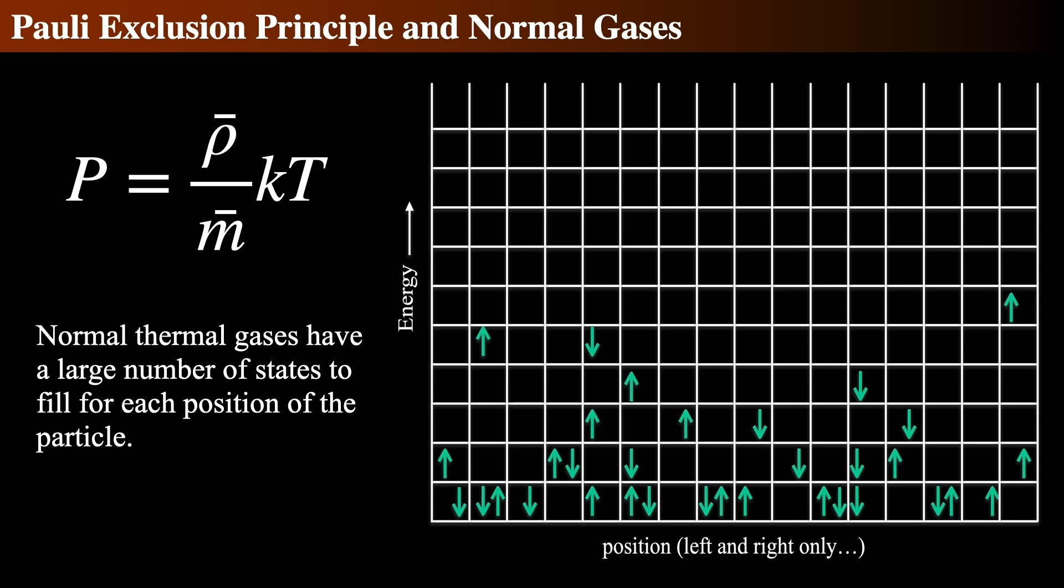Now, if we really wanted to do this right, we'd need a six-dimensional cube to get all of the quantum states in the entire phase space. But as you can see, a normal gas has a pretty good distribution of high and low energy electrons with a mix of ups and downs. There's lots of freedoms for electrons to gain and lose energy and lots of places to go.